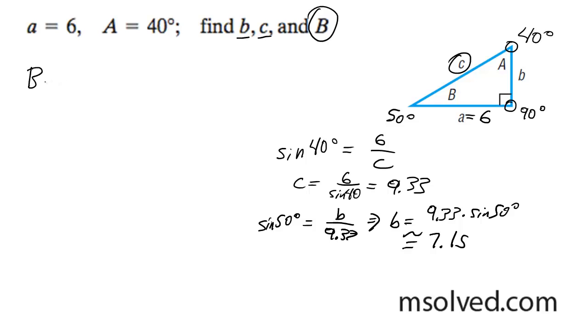So in conclusion, angle B is 50 degrees, b equals 7.15, and c equals 9.33. That's it.